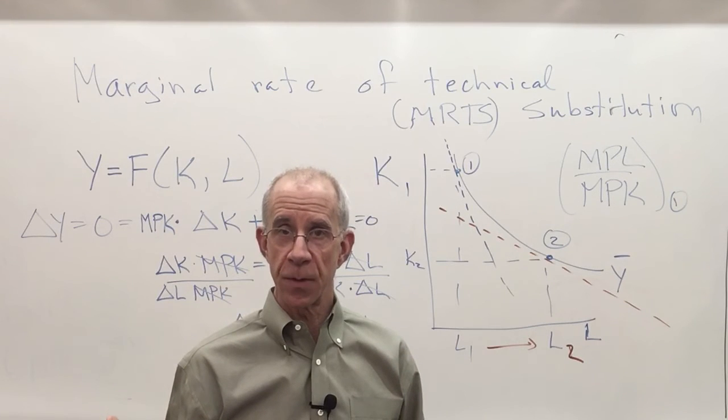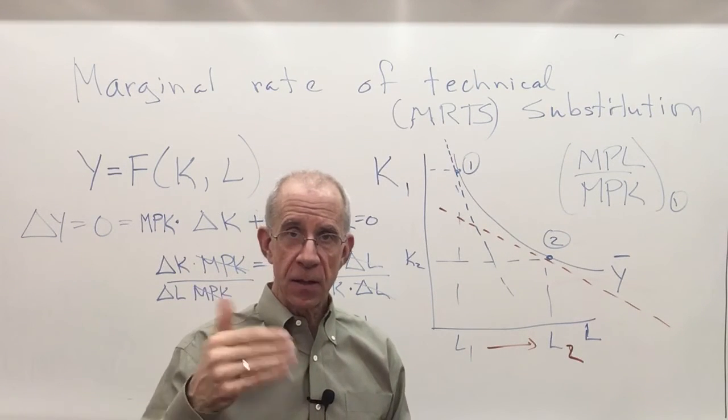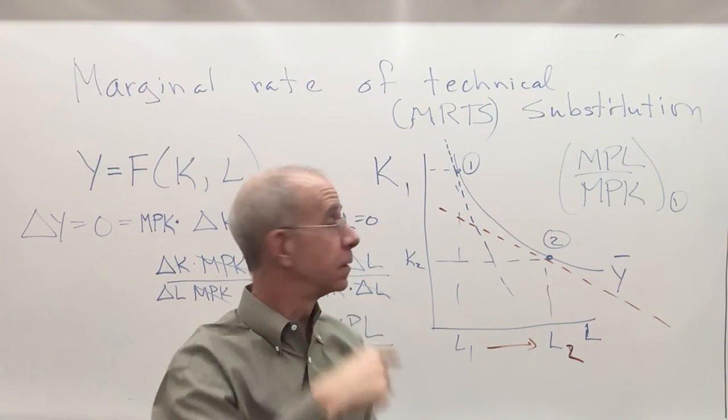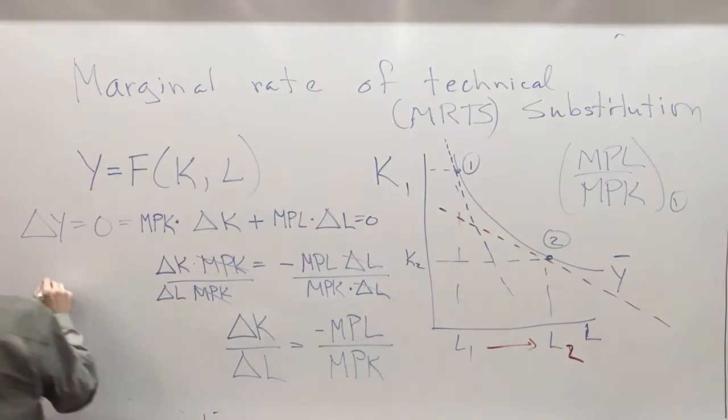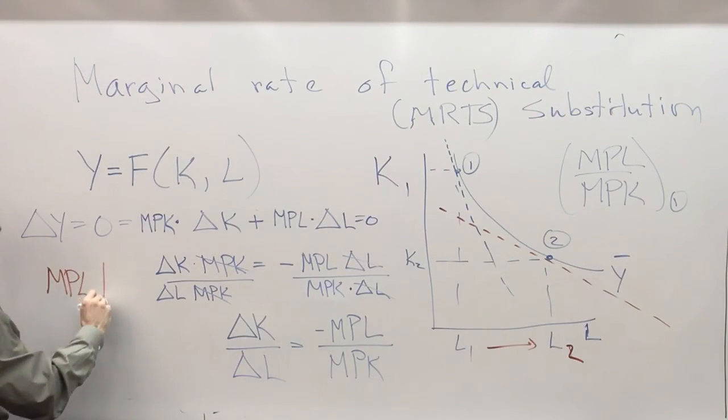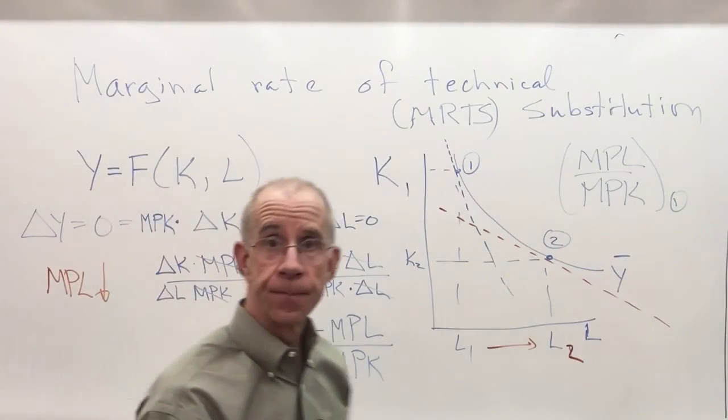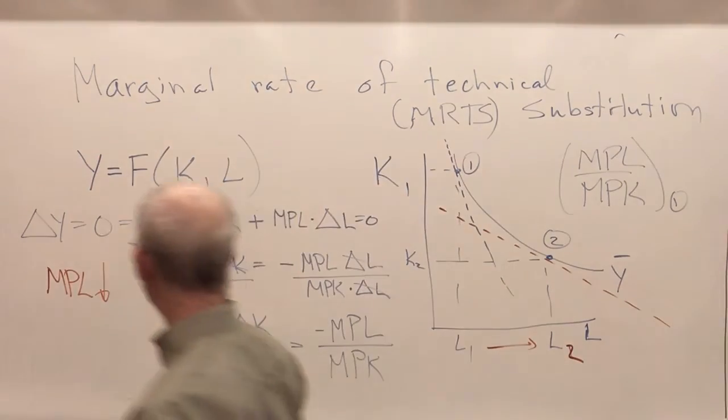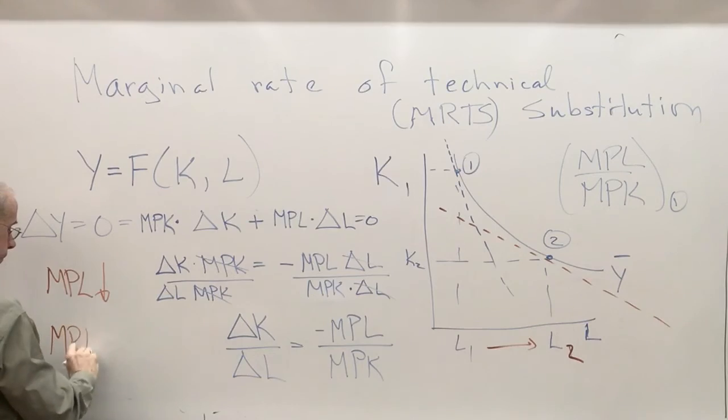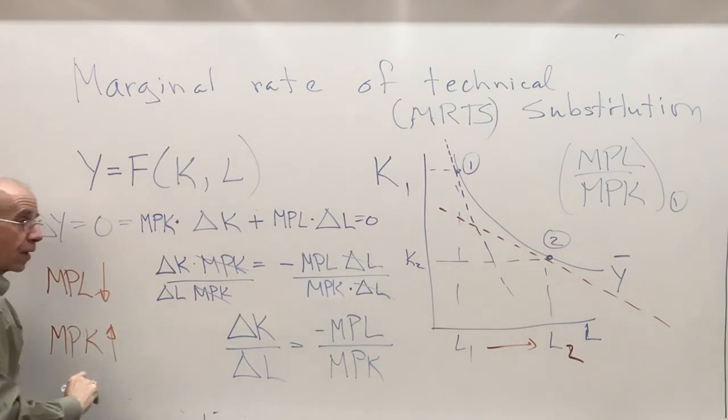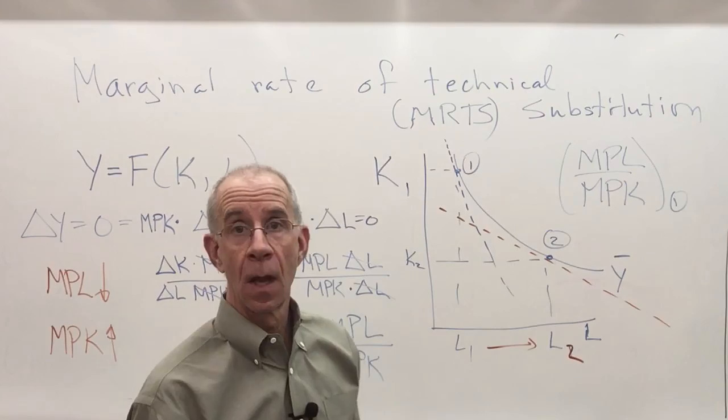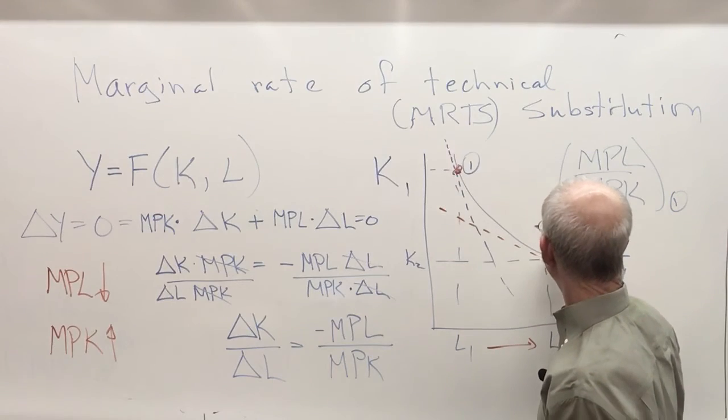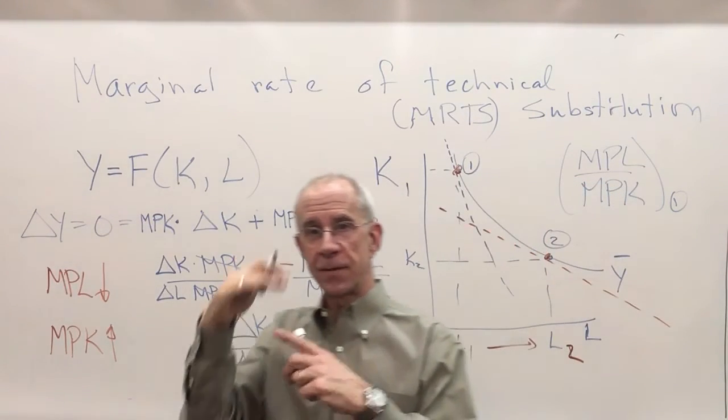What does that mean? I am using more labor and reducing the amount of capital. How does that affect marginal productivity of labor and capital? If I use more labor relative to the capital, then the marginal productivity of labor is falling as I use more labor. However, if I'm using less capital, the marginal productivity of capital goes up. Combination of these two, going from point one to point two, makes the ratio smaller.